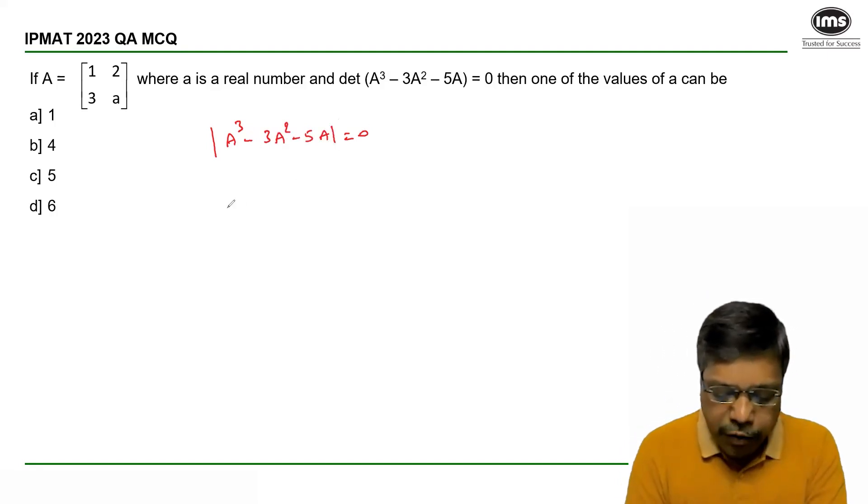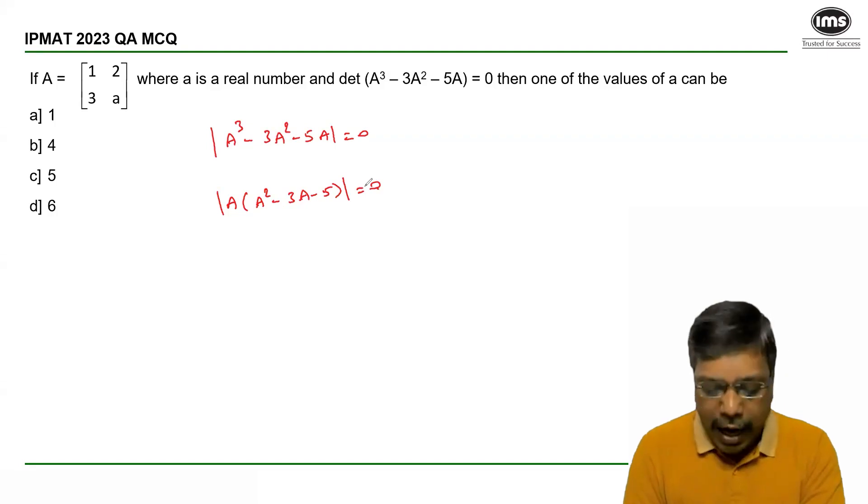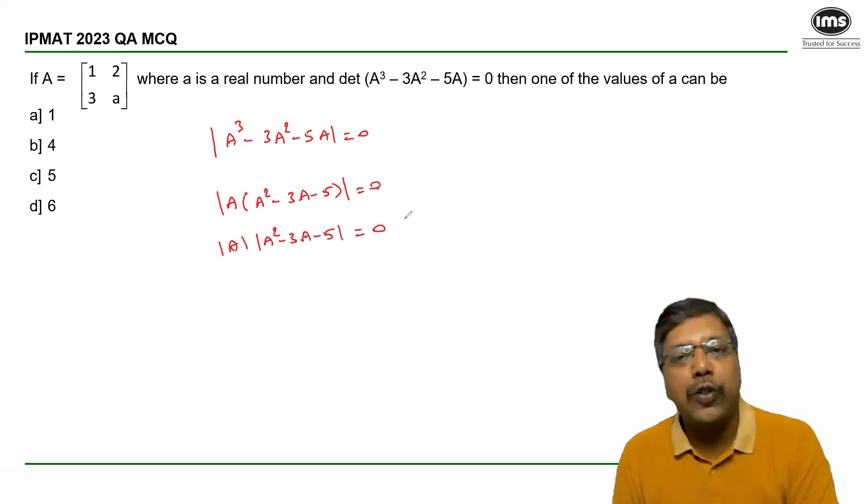Now if I take A common from these three terms, determinant of A into (A² - 3A - 5I), I can separate these two as determinant of A into determinant of (A² - 3A - 5I) equal to 0.